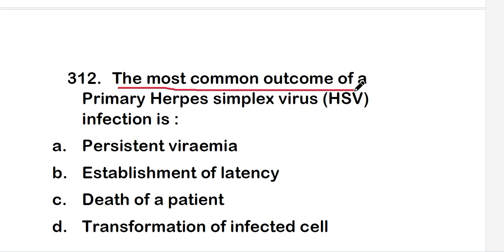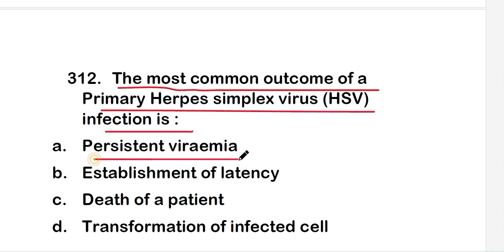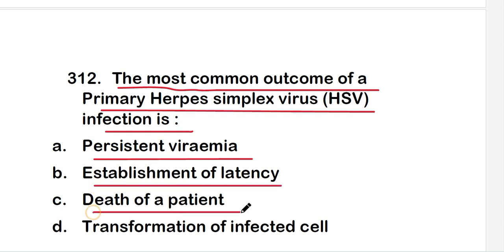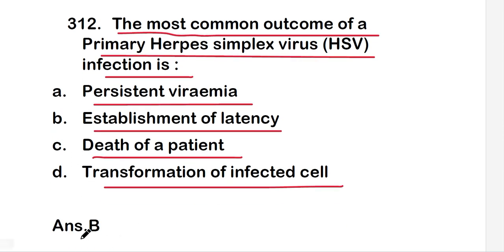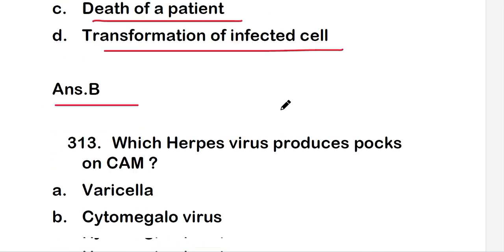The next question is: the most common outcome of a primary herpes simplex virus (HSV) infection is — persistent viremia, establishment of latency, death of patient, or transformation of infected cell? The right answer is option B, that is establishment of latency, which is the most common outcome of a primary herpes simplex virus infection.